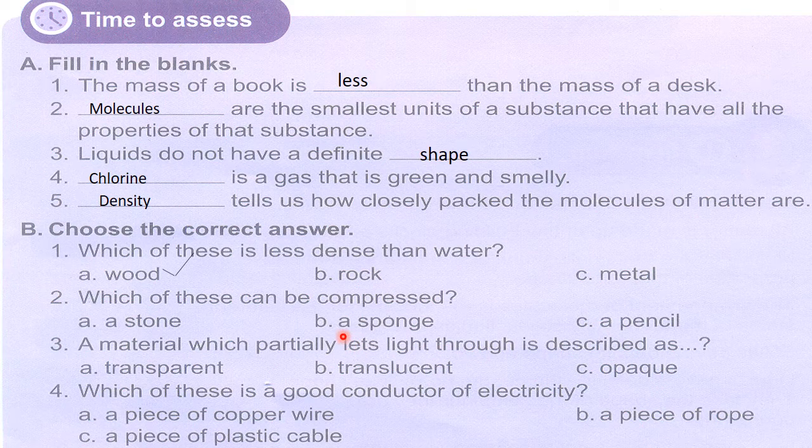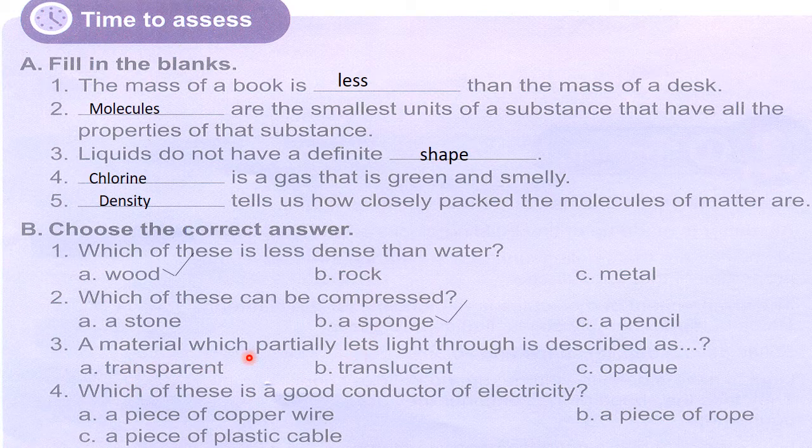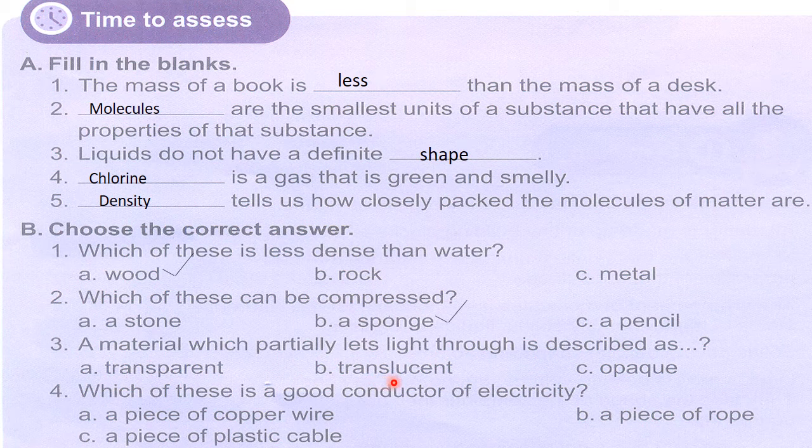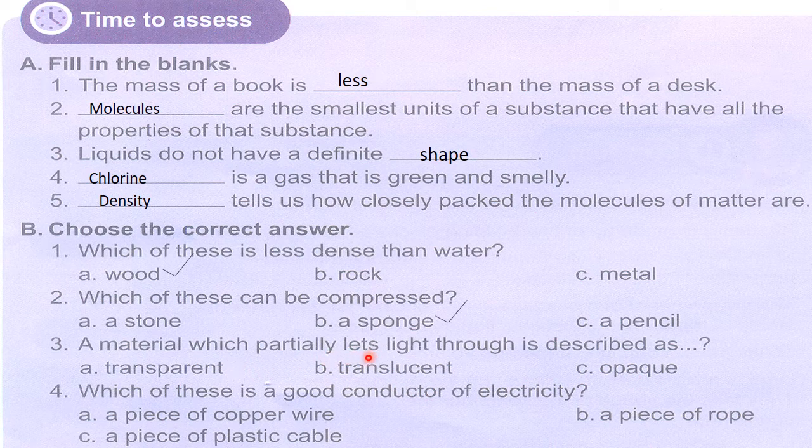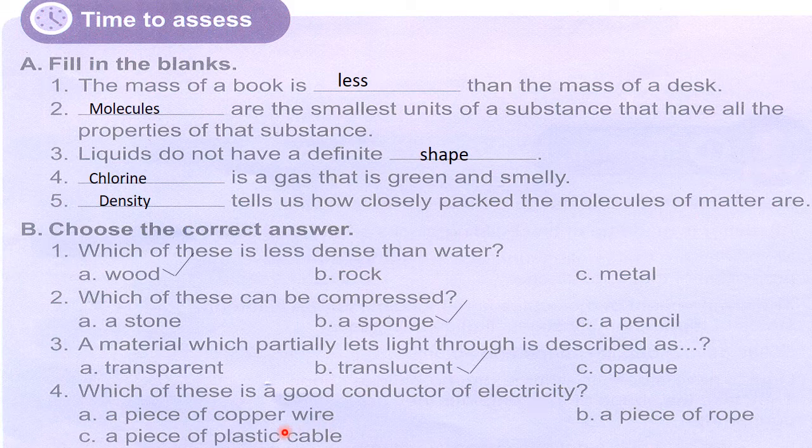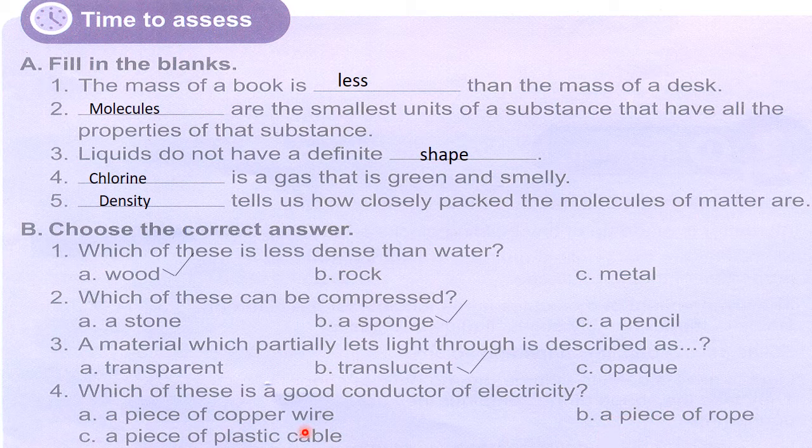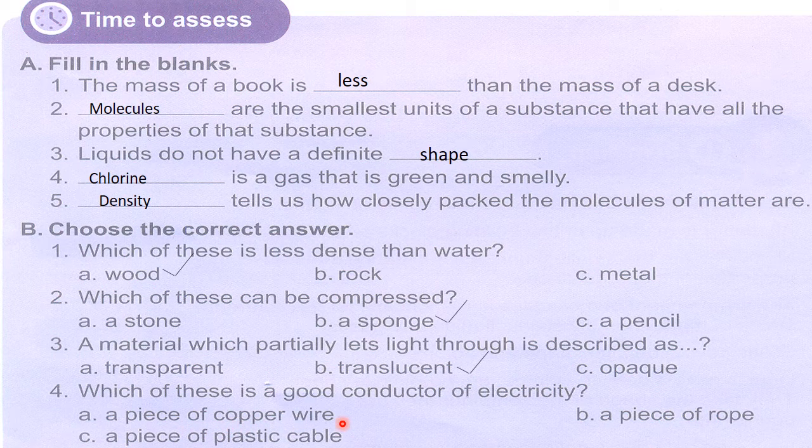We have already read that only a sponge can be compressed. A material which partially lets light through is described as transparent, translucent, or opaque - translucent is a material which lets the light pass through it partially. Which of these is a good conductor of electricity: a piece of copper wire, a piece of plastic cable, or a piece of rope? A piece of copper wire is the best conductor out of these three.